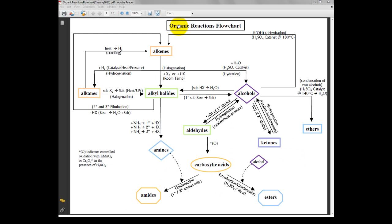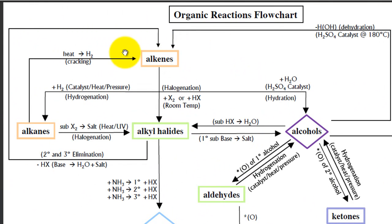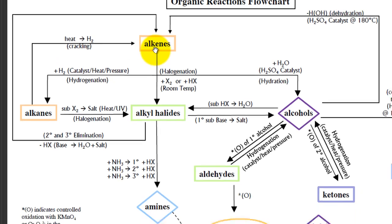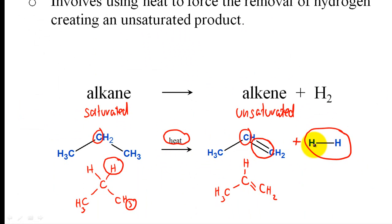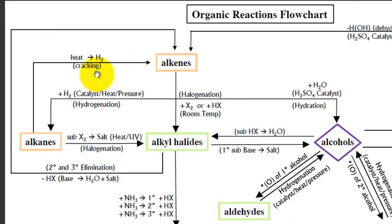Looking at the organic reactions flowchart, for this tutorial we are concentrating primarily on the reactions in the top left-hand corner. We are looking at the reaction of alkanes and how to turn them into alkenes. Heat produces hydrogen gas as well as an alkene, and this process is known as cracking.